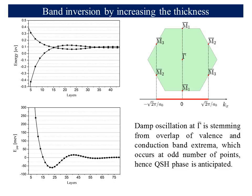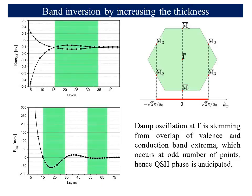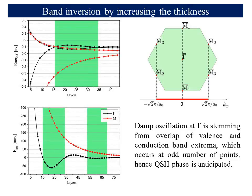Tight-binding calculations reveal that in a tin telluride thin film, within particular thicknesses, valence and conduction bands intercross. This leads to oscillation of the energy gap at the gamma-bar point with the film thickness. The green highlighted region shows where the magnitude of the energy gap is negative. On the other hand, the energy gap at the M-bar point is monotonically decaying with the film thickness.